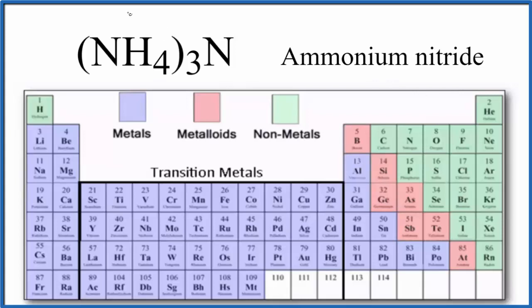So we have the ammonium ion, NH4, and then we have the nitride ion. This is the N here. If we look at these, we have nitrogen and we have hydrogen, and these are all non-metals, so we kind of expect it to be covalent or molecular.